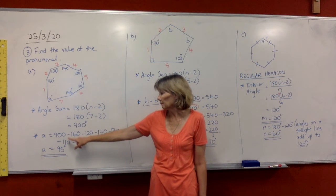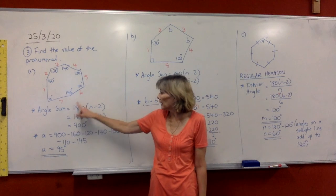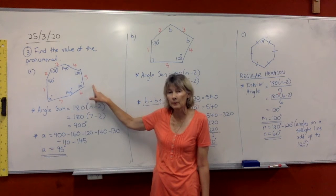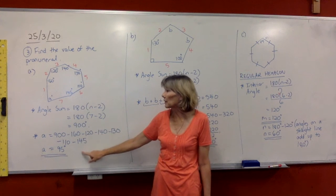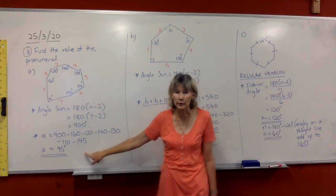After that, we're going to get our angle sum of 900 for this shape and take off the angles that we already have up here, and that will leave us with our missing angle. A will be 95 degrees.